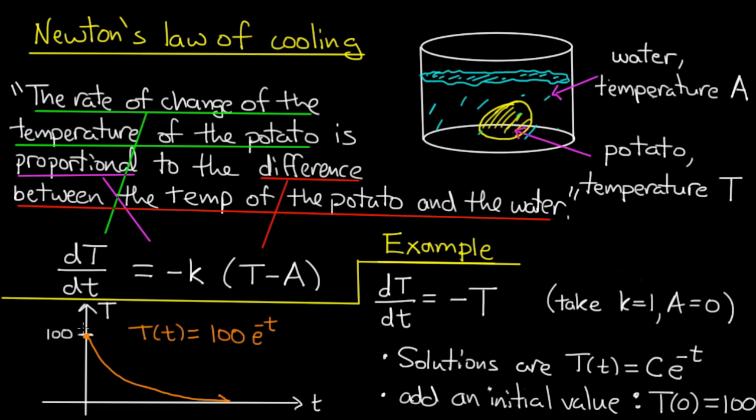And I have a little kind of rough graph here. I start off at the value of 100 and then I decrease exponentially to 0. So that should make sense physically with what you would expect if you were to take a boiling hot potato out of a pot of water on the stove and throw it into an ice bath.